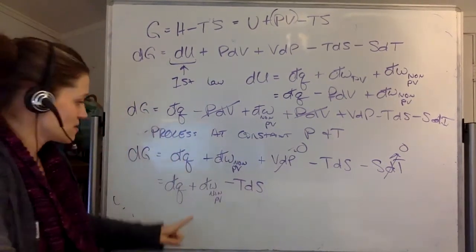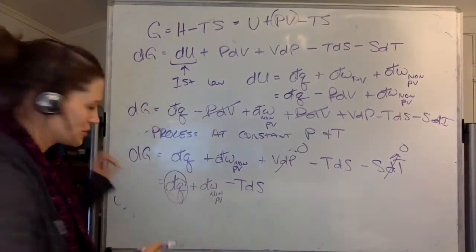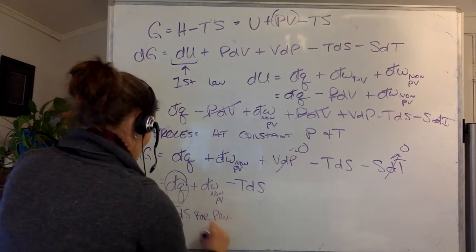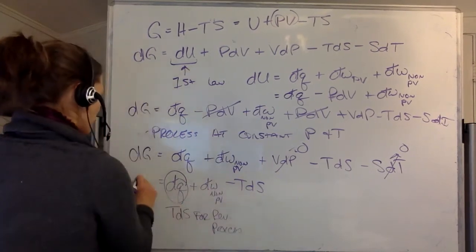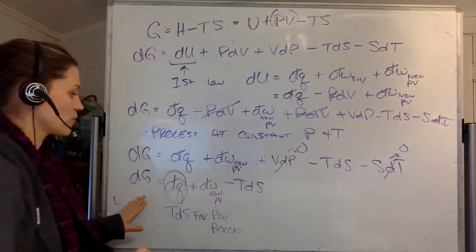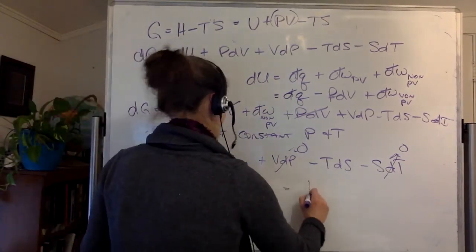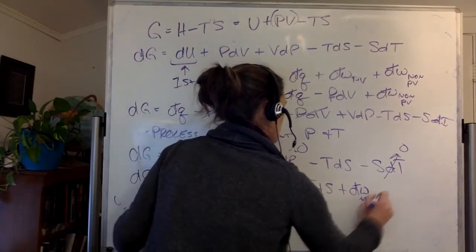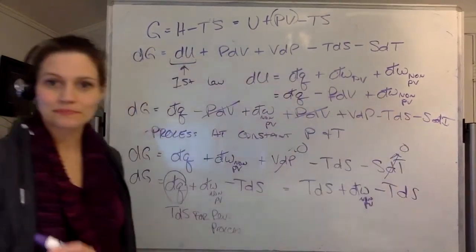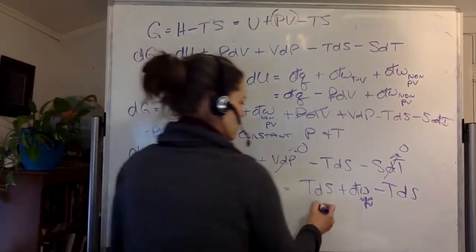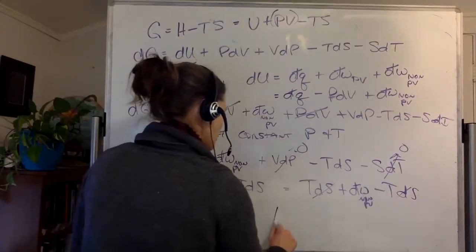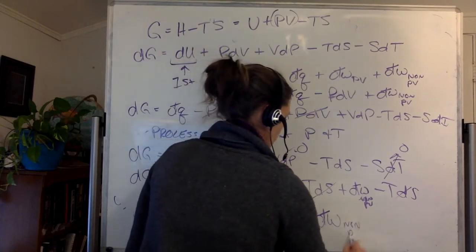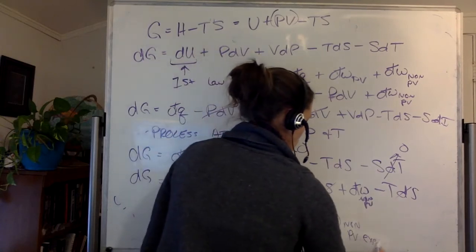For a reversible process, this is equal to TdS for reversible process. So we can go further still and say if we have a reversible process, this equals TdS plus dW non-PV minus TdS. So now, this and this cancel, and I'm left with delta G is equal to the change in the work energy for a non-pressure volume expansion work.